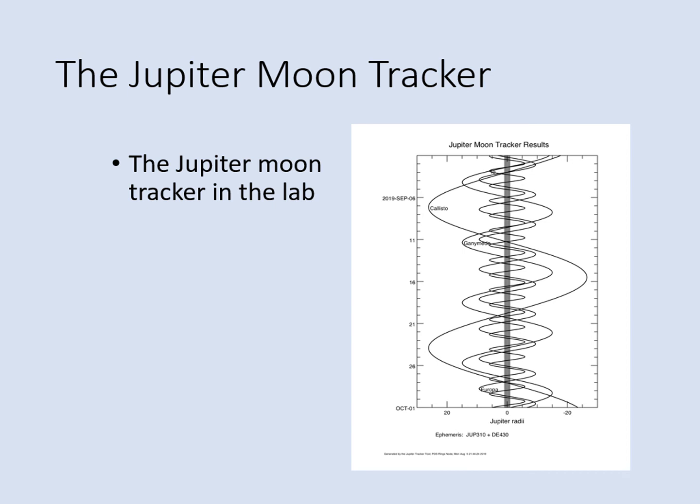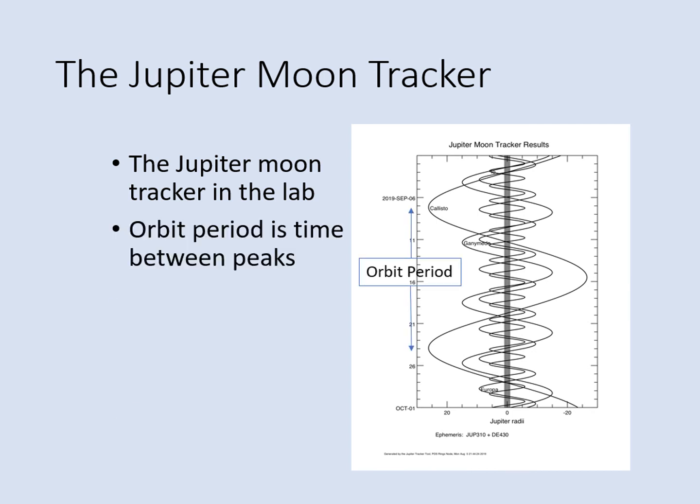Here is the Jupiter Moon Tracker diagram from your lab. You'll be asked to measure two things about each moon's orbit. First, you should find the period of the orbit — that's just the time it takes a moon to go around Jupiter once. The easiest way to measure that is to look for when a moon is at its extreme distance from Jupiter on one side of the planet or the other, then look at the number of days until the next time it is furthest on that same side. Notice the dates on the vertical scale are successive midnights — count the days, not just the number of midnights. You should record this number as accurately as possible, to the nearest half day at least.